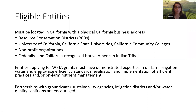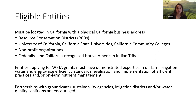This is a list of eligible entities, which should be familiar if you applied last year or are familiar with our technical assistance programs. You must be located in California with a physical California business address. Eligible entities include RCDs, University of California and California State Universities, California Community Colleges, nonprofit organizations, and federally and California recognized Native American Indian tribes. Entities applying for water grants must have demonstrated expertise in on-farm irrigation water and energy use efficiency standards, evaluation and implementation of efficient practices, and/or on-farm nutrient management. Partnerships with GSAs, irrigation districts, and/or water quality coalitions are also highly encouraged.